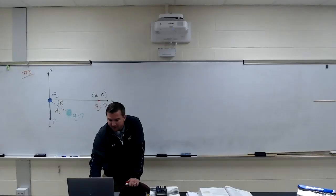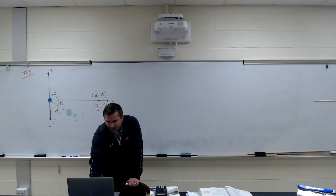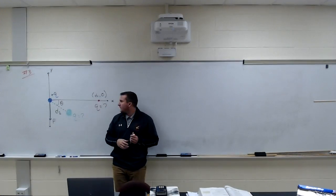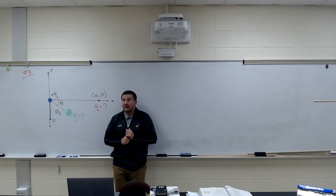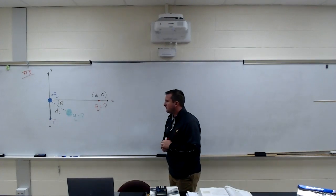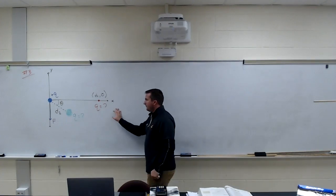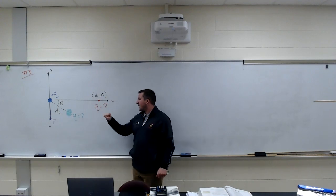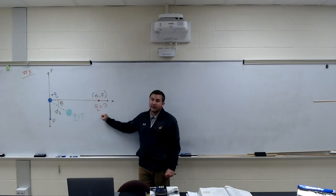Here we've got problem number three. We've got a situation set up: a blue particle at the origin, which we know the charge of — it's positive Q and it is fixed in place. We have a red particle at D1 comma 0, some distance on the x-axis, and we know nothing about it — we don't know its charge.